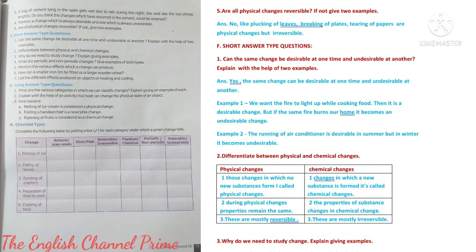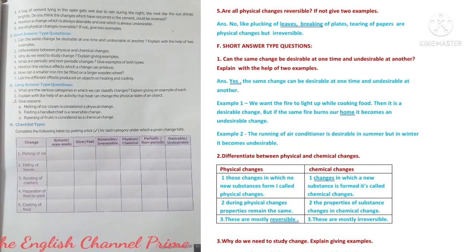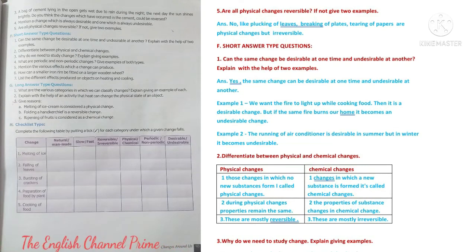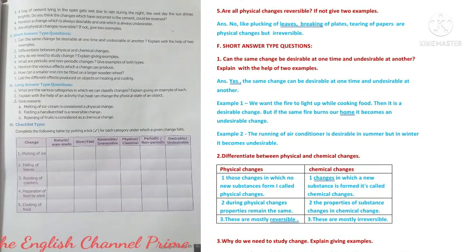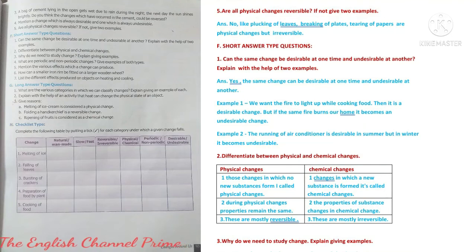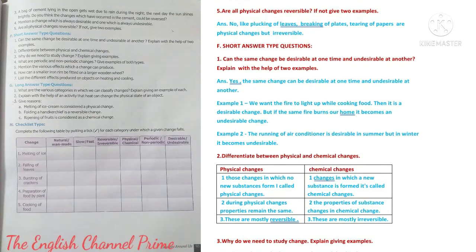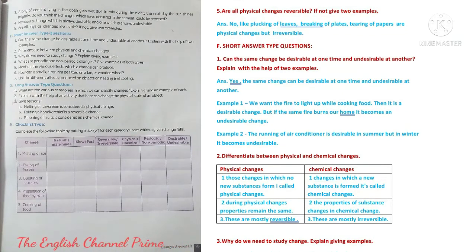Question two: Differentiate between physical and chemical changes. Physical changes: no new substance is formed; properties remain the same; and these are mostly reversible. Chemical changes: new substances are formed during these changes; the properties of the substance change; and these are mostly irreversible.